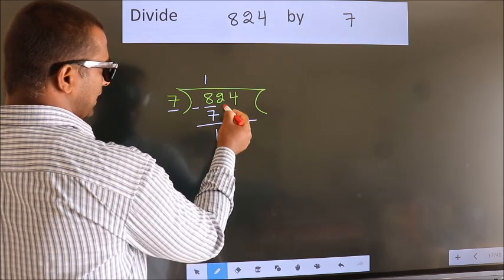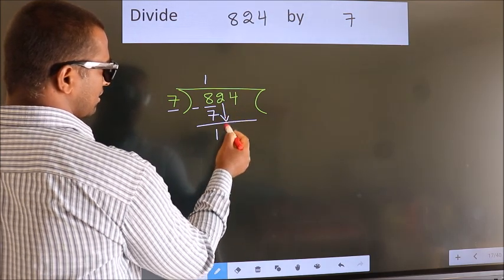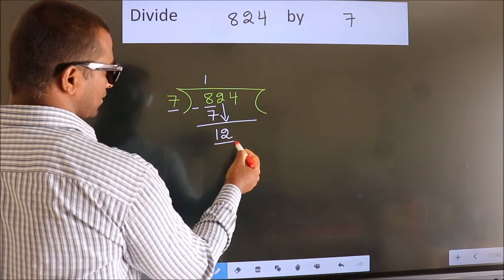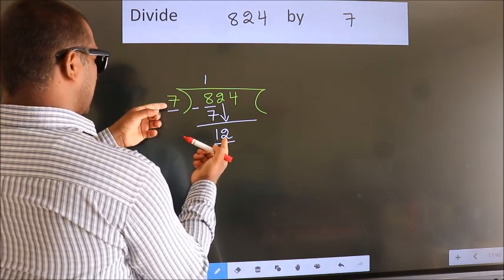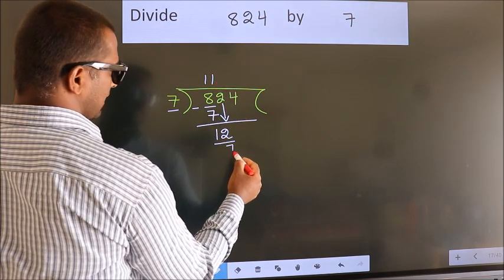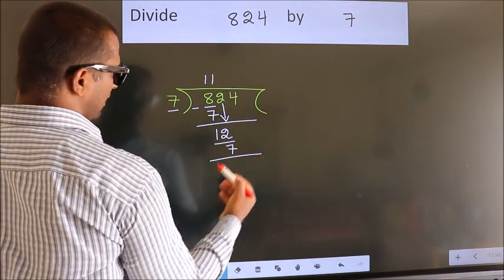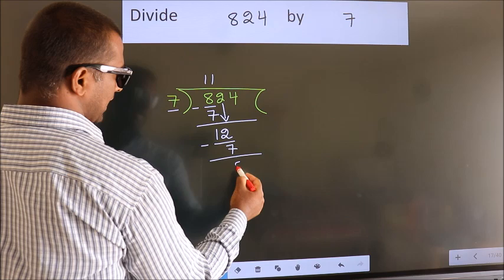After this, bring down the beside number. So 2 down. So 12. A number close to 12 in 7 table is 7 once 7. Now we subtract. We get 5.